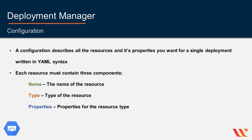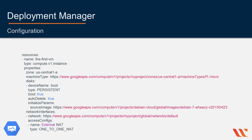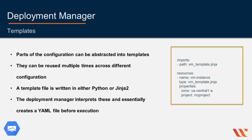Properties must match the properties for the resource type, and there are some required properties. This is an example of a configuration file in YAML. Here you can see one resource described with the three required components: name, type, and properties. This configuration file is for deploying a VM instance, with different properties — some required and others optional.